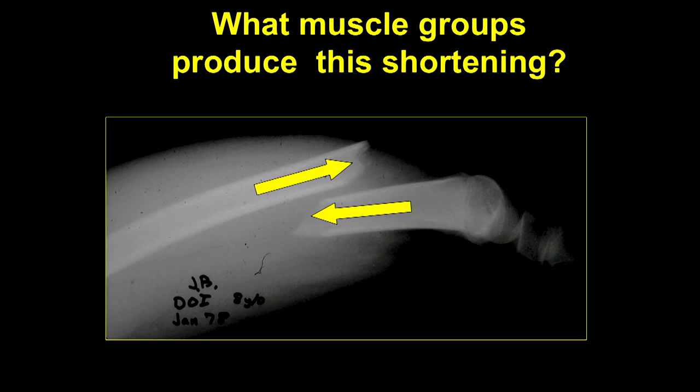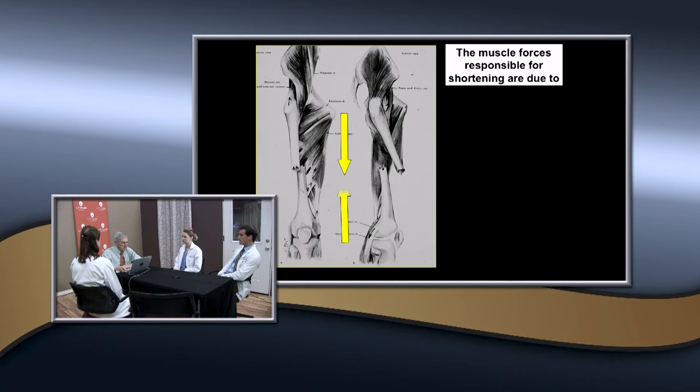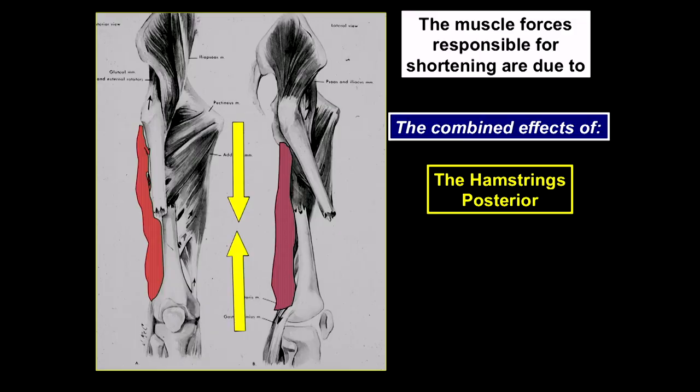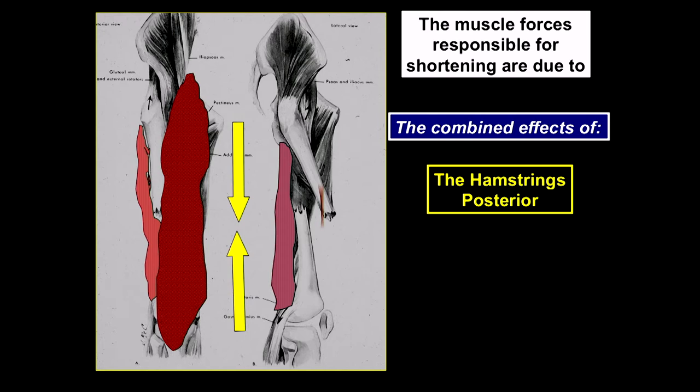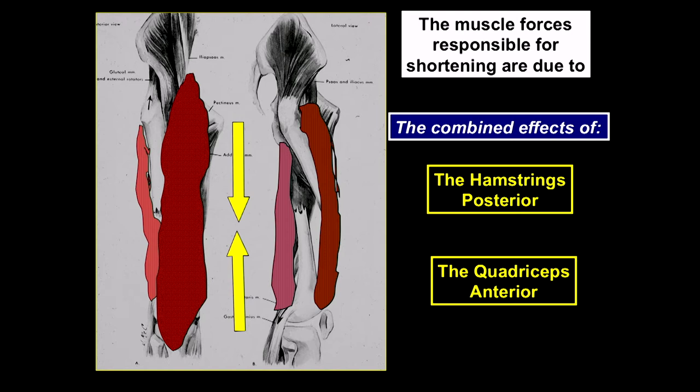Most femoral shaft fractures have shortening. Why? What muscles are involved? Your hamstrings and your quads—it's a combination effect of the hamstrings posteriorly, which are two-joint muscles, and the quadriceps, also a two-joint muscle. The quadriceps doesn't really attach much to the femur but attaches a lot more to the proximal tibia through the patella.